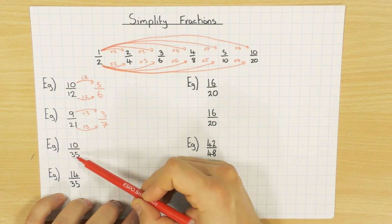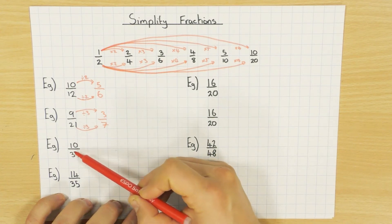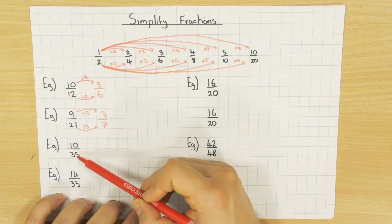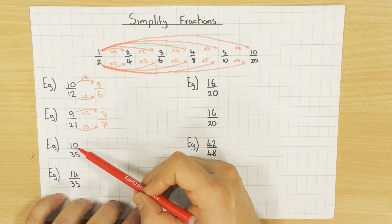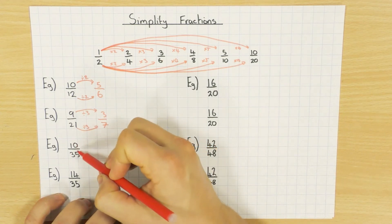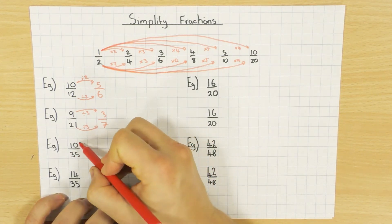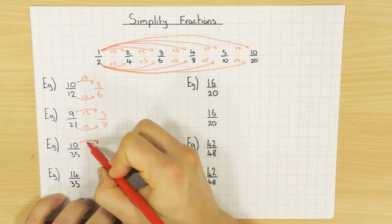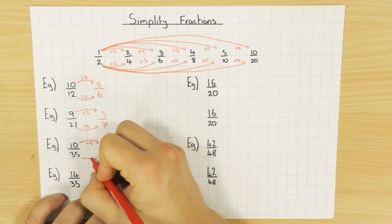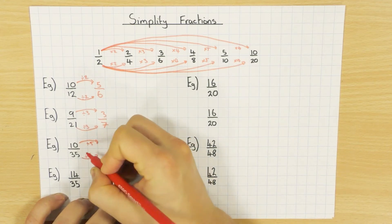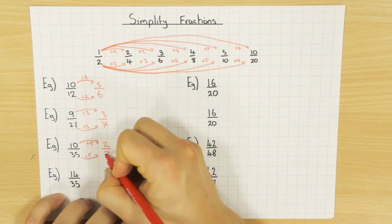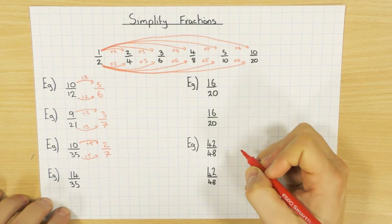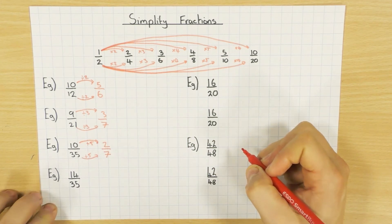This one here: 10 over 35. Well, 2 goes into 10, but 2 doesn't go into 35 because that's an odd number. 3 doesn't go into either one of them, so that's out. 4 doesn't go into either of them, but 5 does — because it ends in a 0 and a 5, I know that 5 will go into both of them. So divide by 5, divide by 5. 10 divided by 5 is 2, and 35 divided by 5 is 7, so I have 2 sevenths. That's in its simplest form.